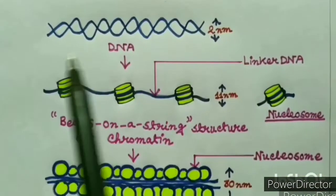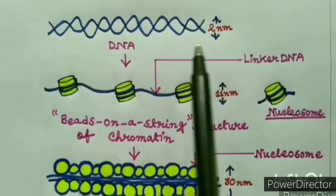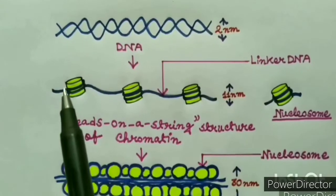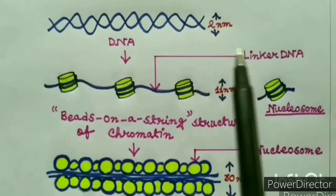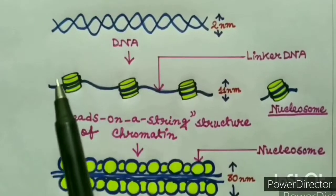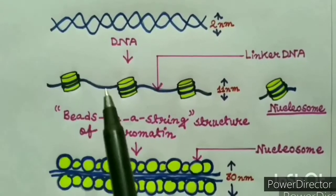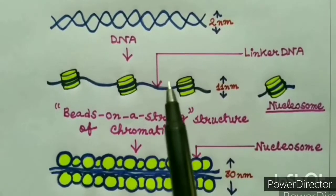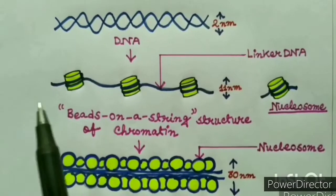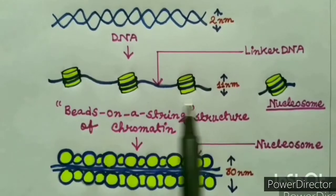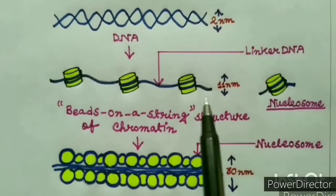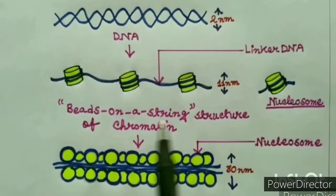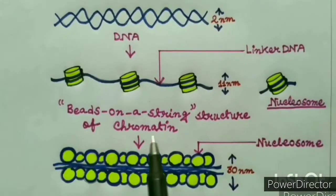The condensation or packaging of DNA starts when a single double-stranded DNA is wrapped around specific proteins, and the entire structure that is formed is called the beads-on-a-string structure of chromatin.